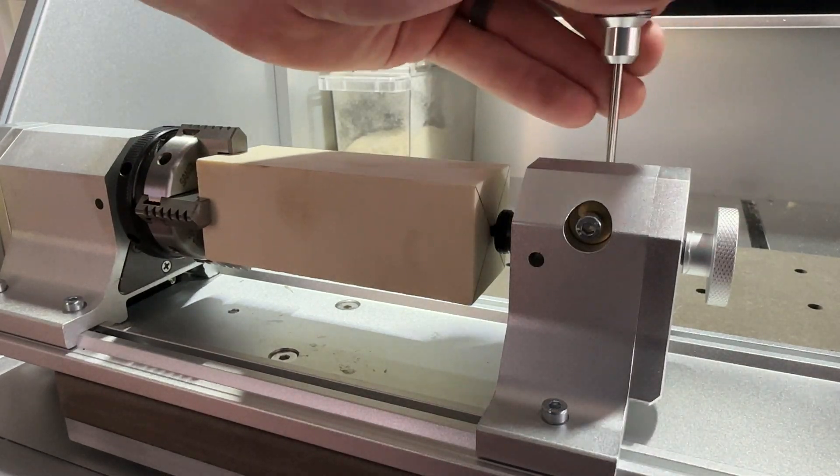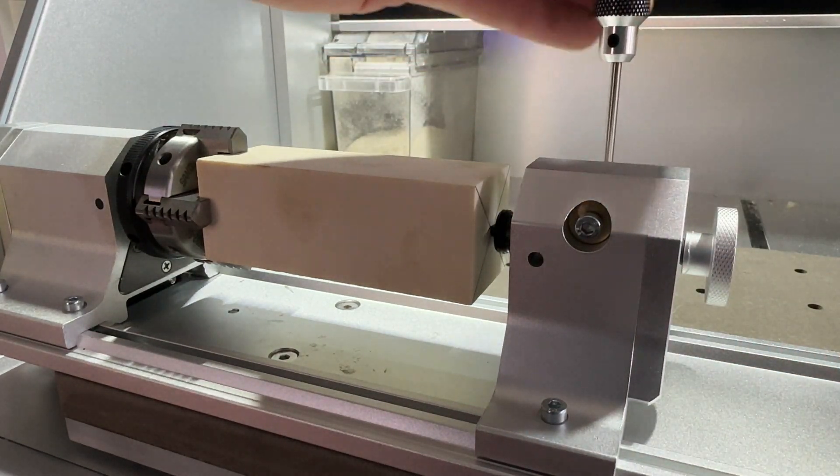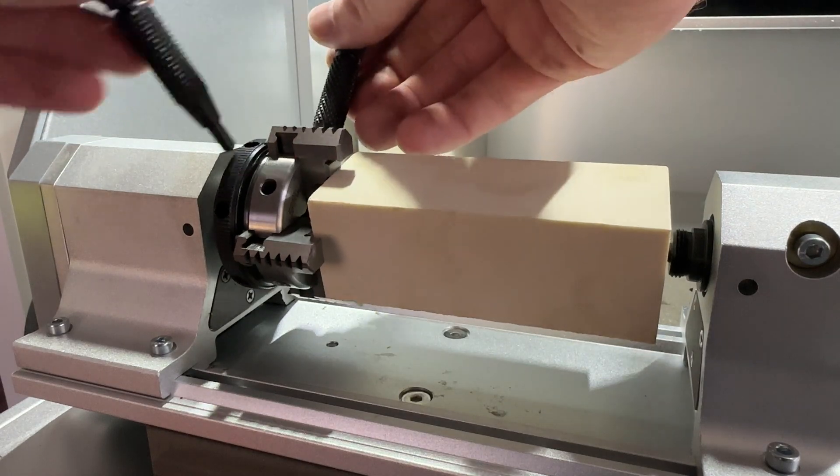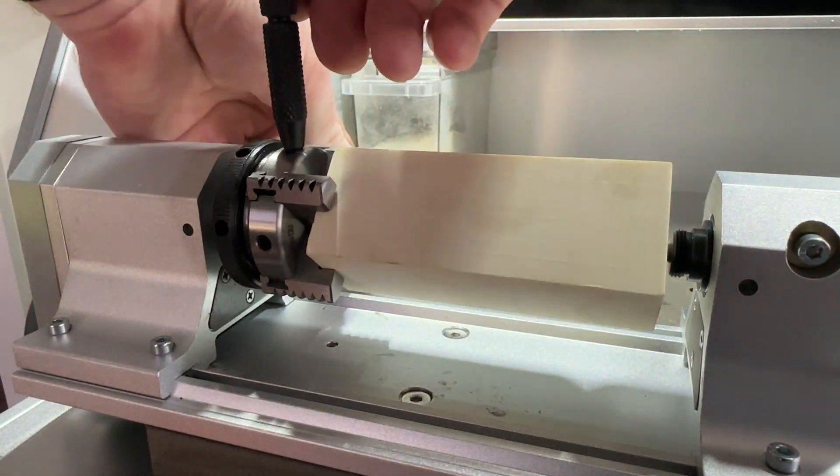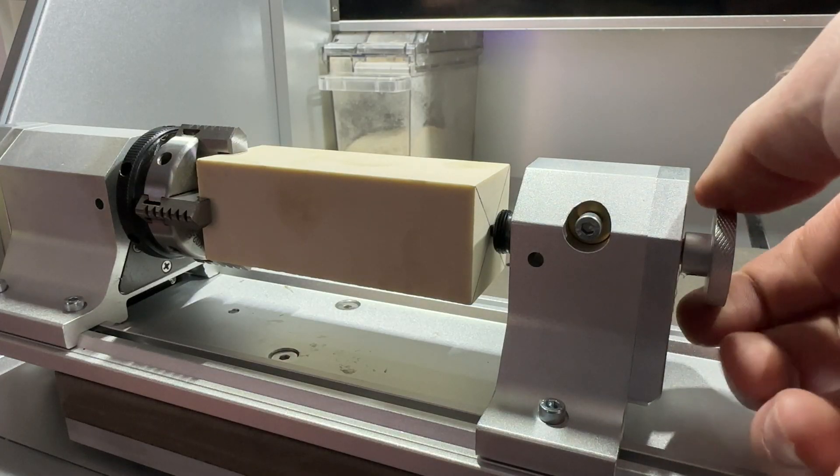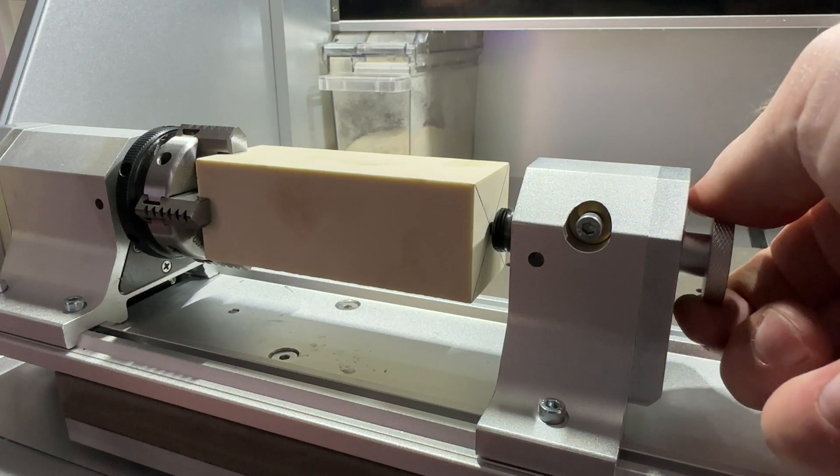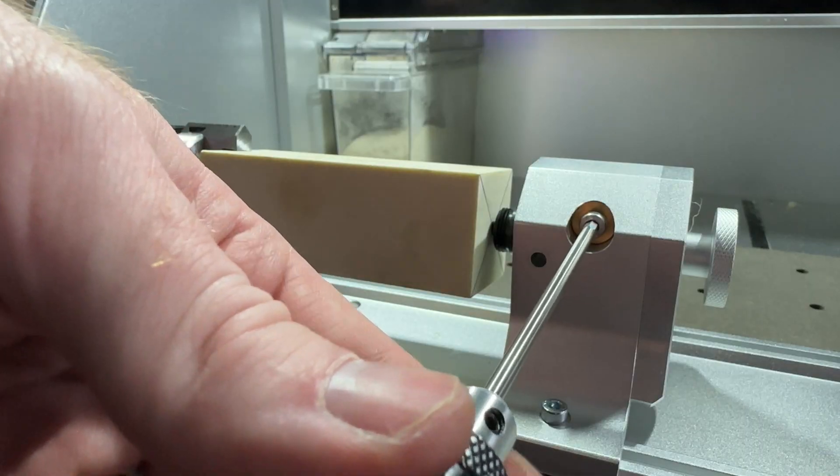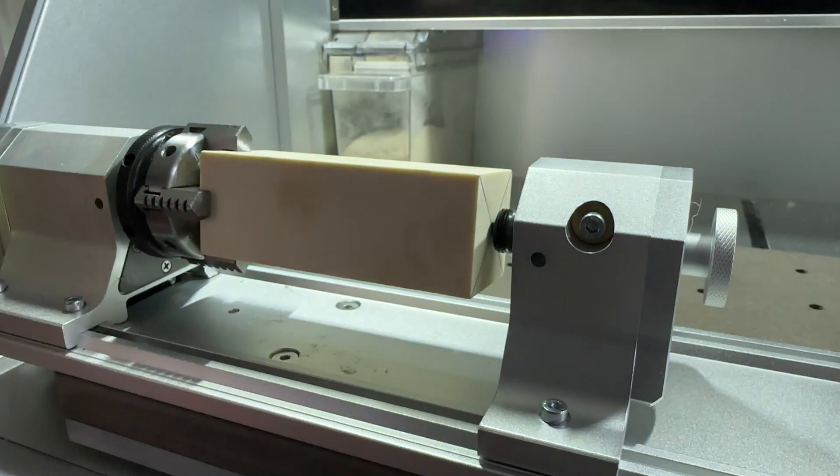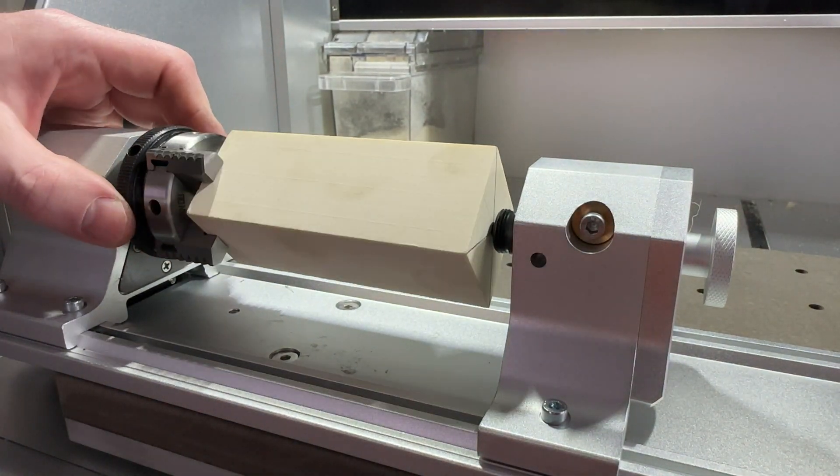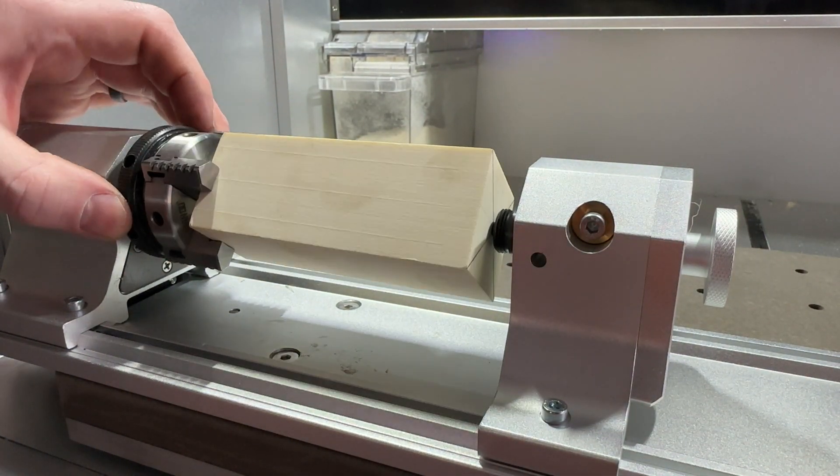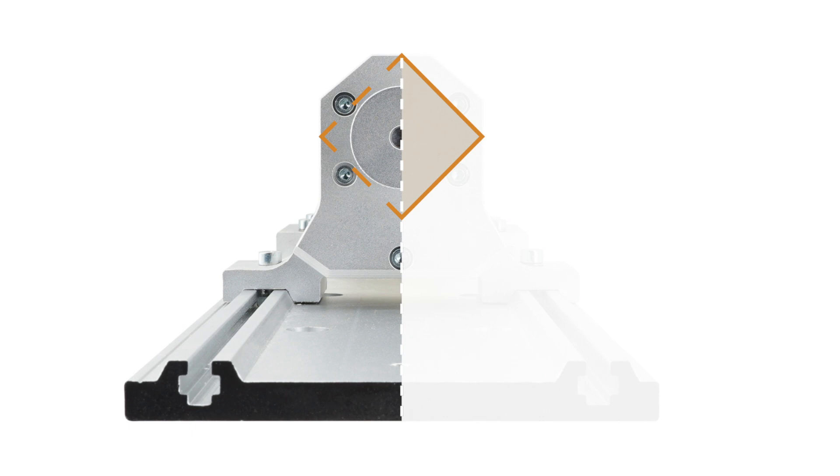Tighten the two set screws for the rail of the tail stock so it cannot slide away from our part. Next tighten the chuck jaw so the stock is held securely in the center of our chuck. Rotate the knob of the tail stock to press and secure our piece of material, then tighten the set screw at the top of our tail stock. Lastly, rotate the stock so that the corner aligns with the vertical axis or up and down as shown in the example guidebook.